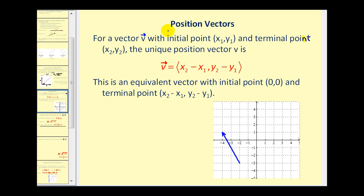For a vector v with an initial point (x₁, y₁) and a terminal point (x₂, y₂), the unique position vector is v = ⟨x₂ - x₁, y₂ - y₁⟩. This is an equivalent vector with the initial point (0,0) and terminal point as we see here.